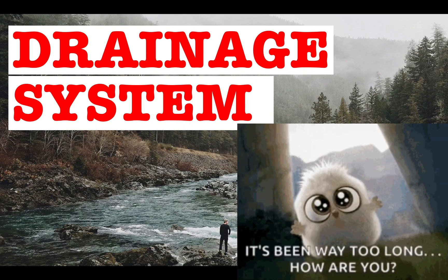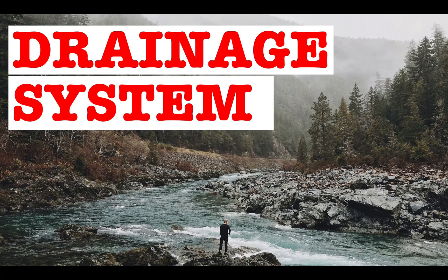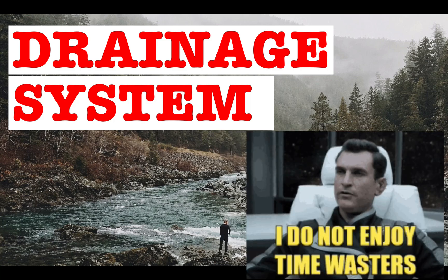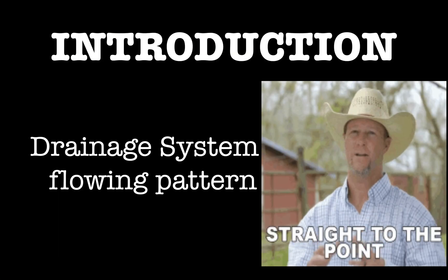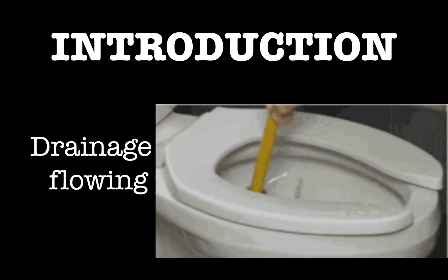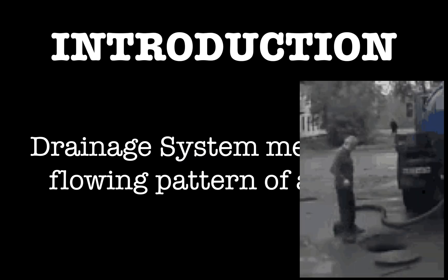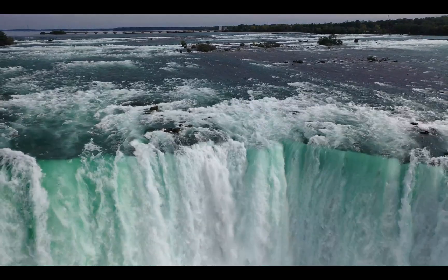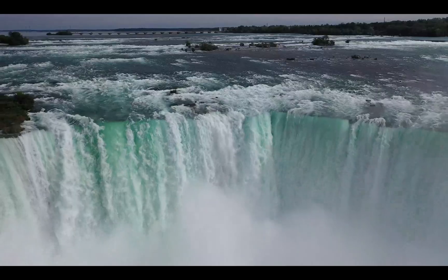In this video we are going to talk about different drainage systems, or as you can say different drainage patterns. Without wasting your time, let's get right to the point. Drainage system means what is the flowing pattern of a river. We are not talking about drainage systems flowing underground — not any Nala or Nali — we are talking about the drainage patterns of a big river.